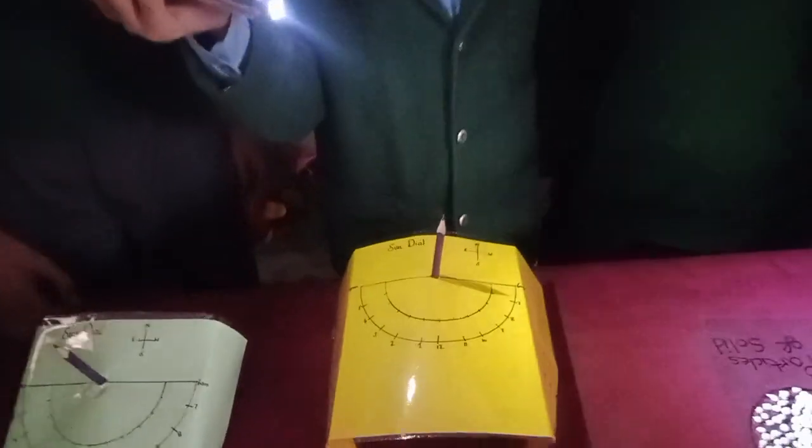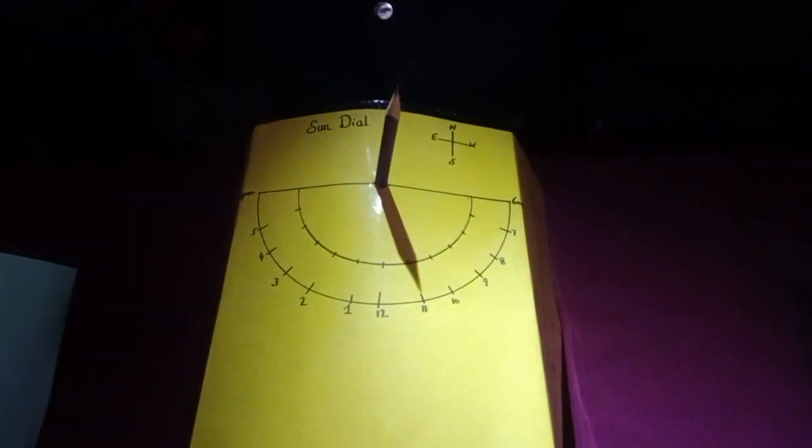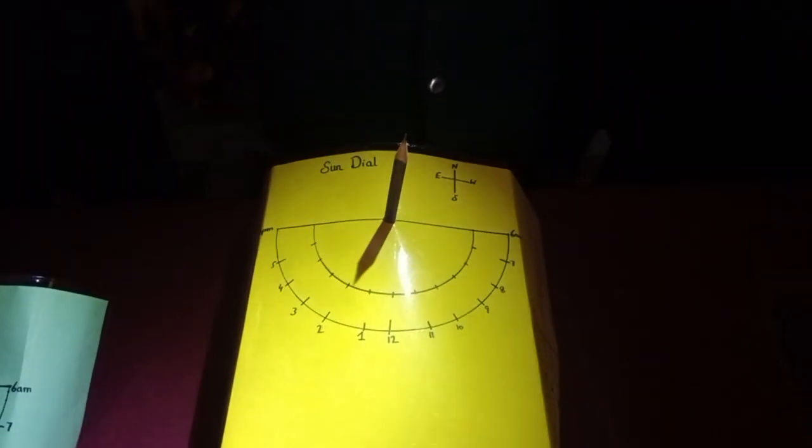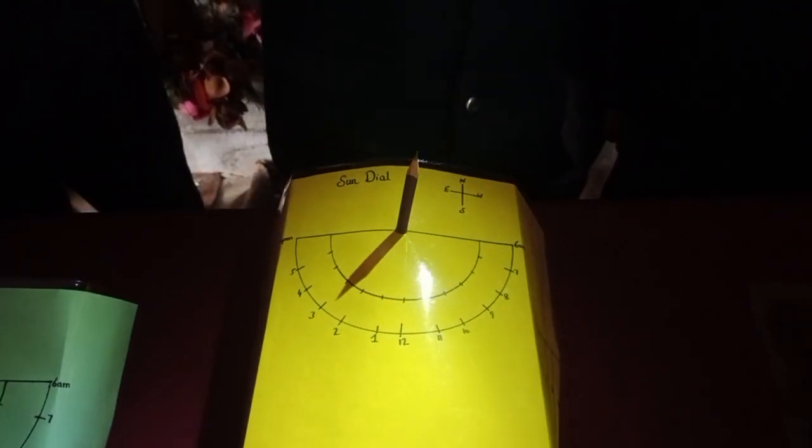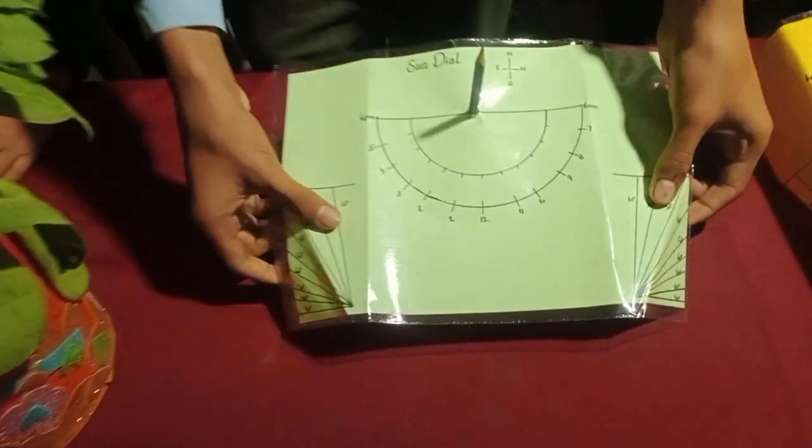I am at 6am and then I am ready to go to school. I marked 2-30, 3-30, 5-30, and then 6am. I have made a model of a sundial.